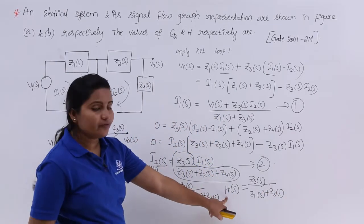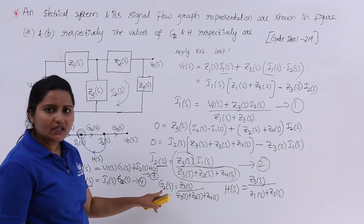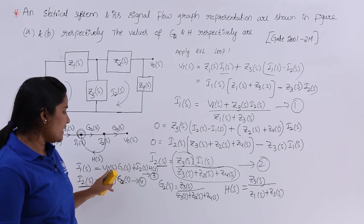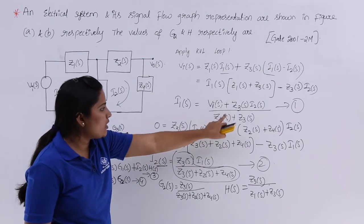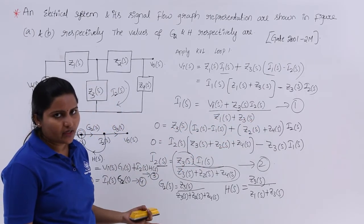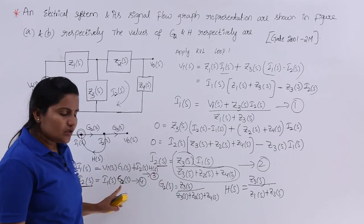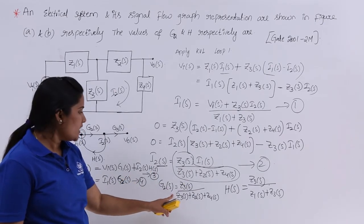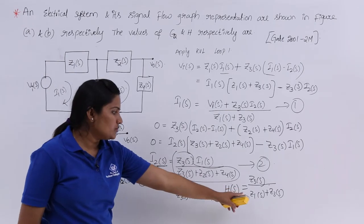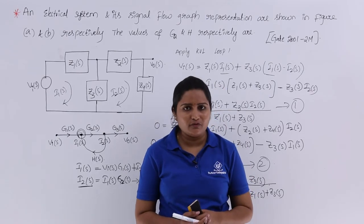So H(S) = Z3(S) / (Z1(S) + Z3(S)) and G2(S) = Z3(S) / (Z3(S) + Z2(S) + Z4(S)). If they had asked for G1(S), it would be 1 / (Z1(S) + Z3(S)), the coefficient of Vi(S). This is how we solve GATE problems involving signal flow graphs and electrical networks.